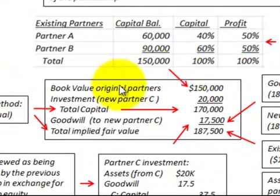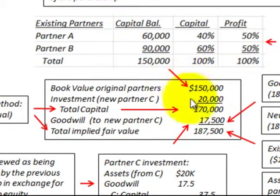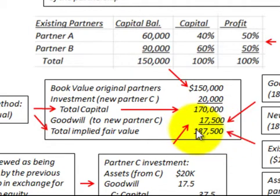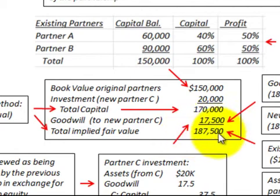Let's look at how we make our calculations. First, we look at the book value of the original partners, which is $150,000. Now we add the investment of the new partner C for $20,000. So our total capital for the new partnership would be $170,000. But we also need to calculate the total implied fair value of the partnership, and we'll find that total implied fair value is $187,500 — giving us a difference of $17,500 that we have to account for.